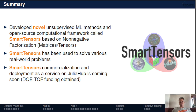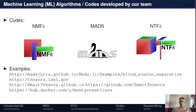In summary, we developed a novel unsupervised machine learning method and a computational framework called Smart Tensors. Smart Tensors has been applied to many different real-world problems. We are currently working on commercialization and deployment of Smart Tensors on Julia Hub, with funding from DOE. Our codes and examples are available on GitHub and also at Docker Hub — please feel free to try and test our algorithms. Thank you very much.